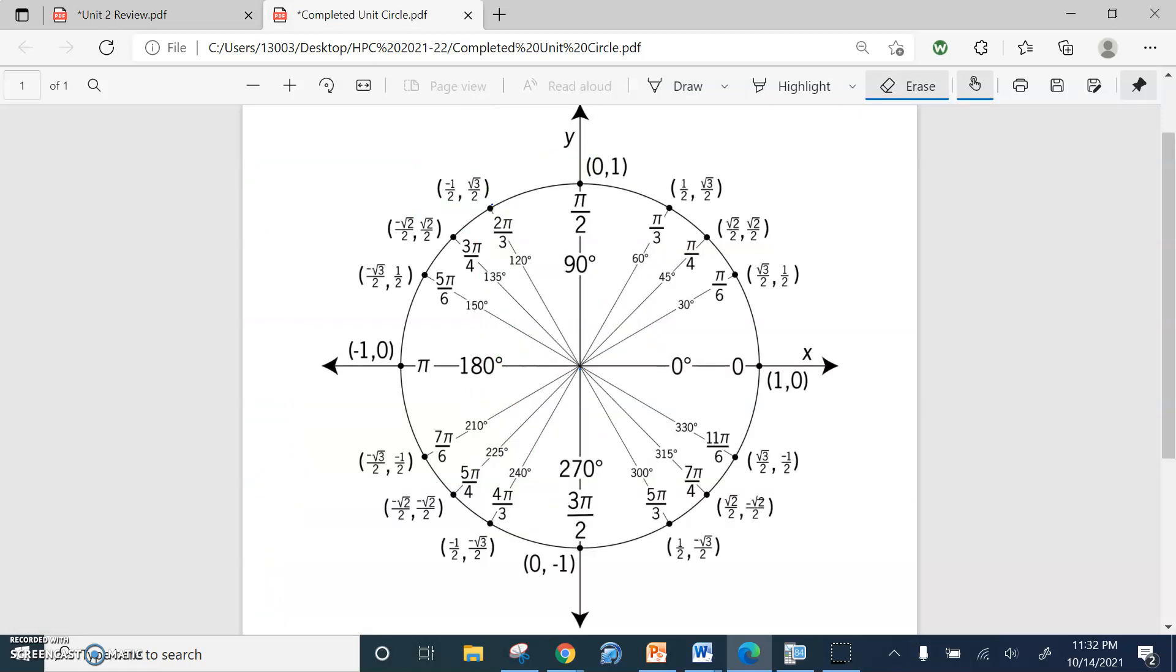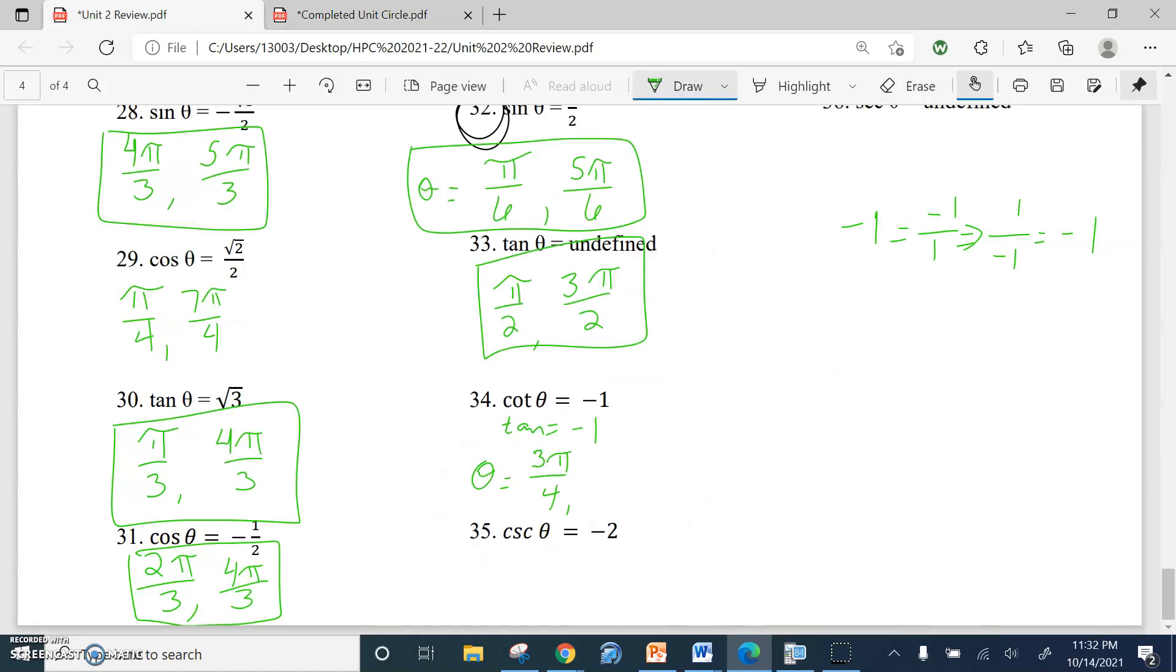So if we took negative root two over two divided by positive root two over two, that gets us negative one. So in fact, there is one of the answers, three pi over four. The other one is going to be down here in the fourth quadrant, because here in the third quadrant, negative x, negative y, your tangent's positive again. Here we have positive x, negative y, so that's going to work out a lot better. So seven pi over four. And there are your answers.